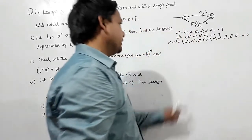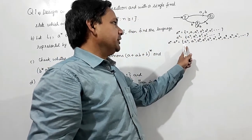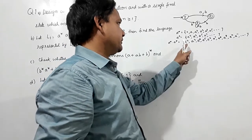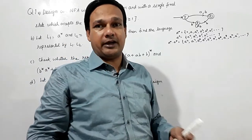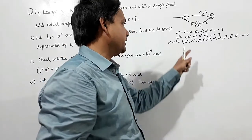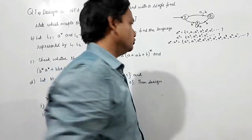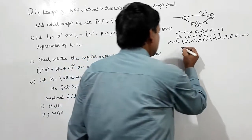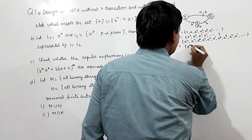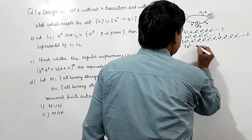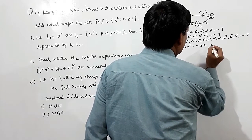So it can be seen here it is accepting all strings of the form a to the power n, where n is greater than or equal to 2. So I can write it as: a to the power n such that n is greater than or equal to 2.